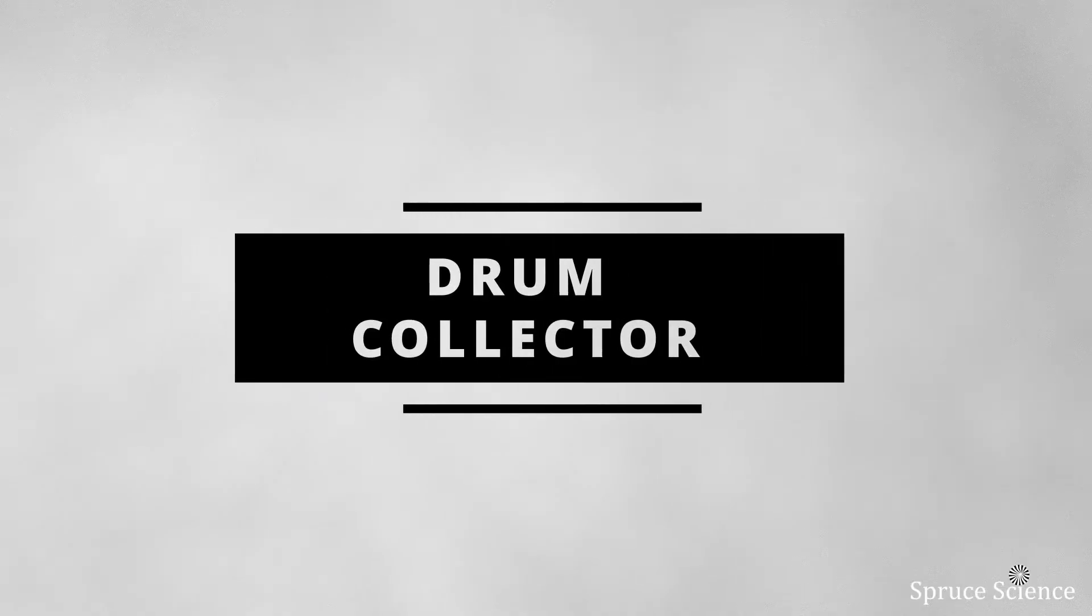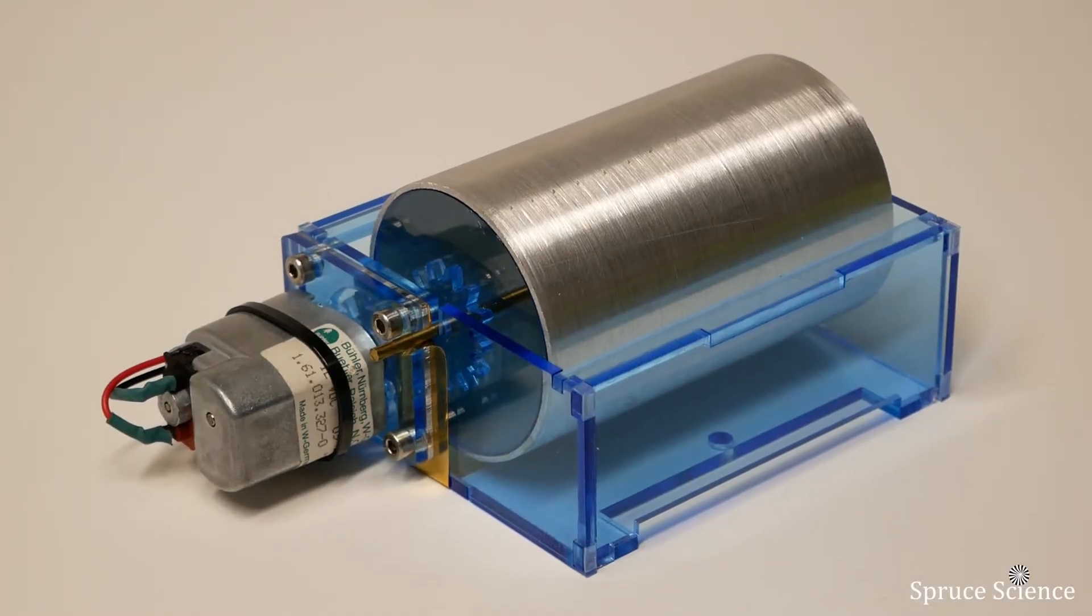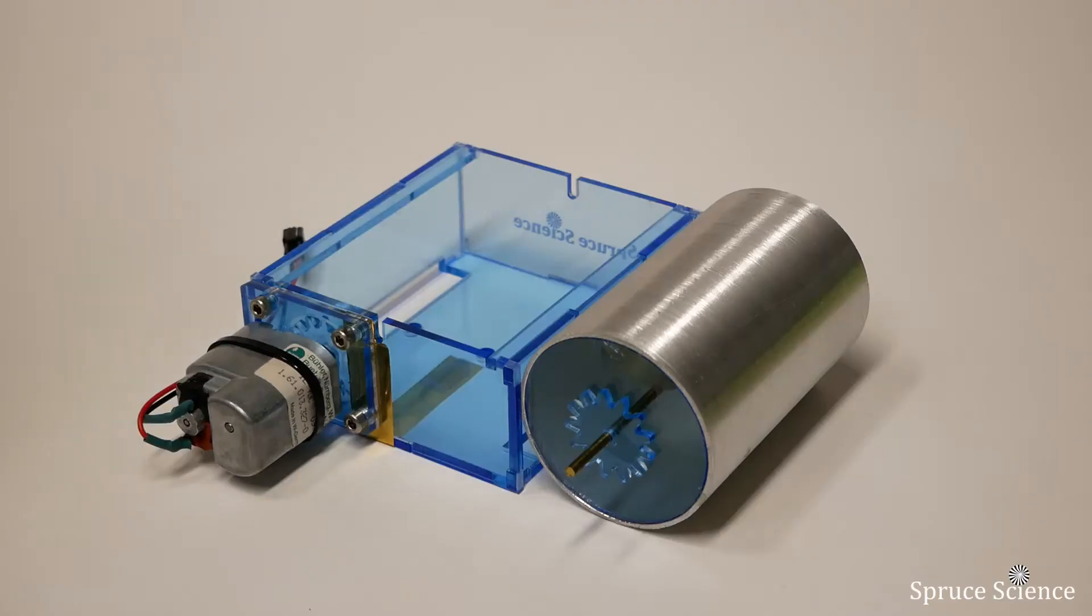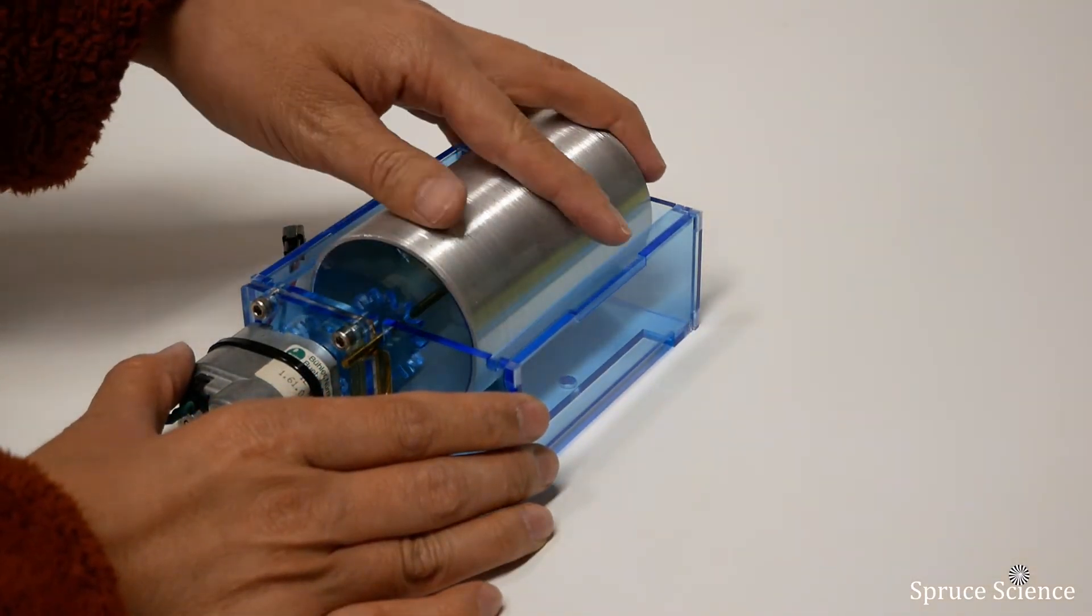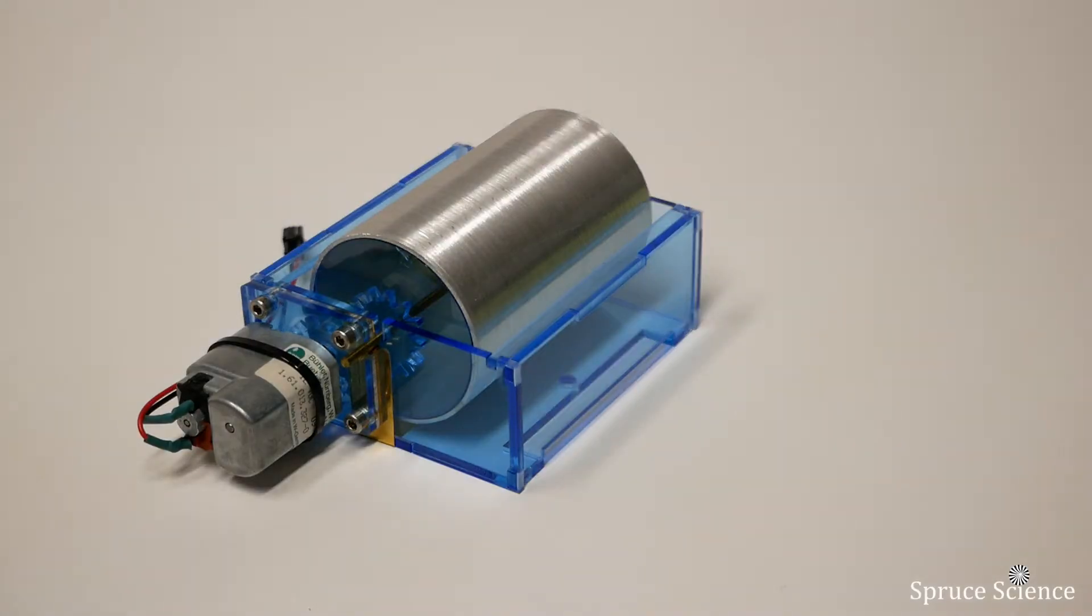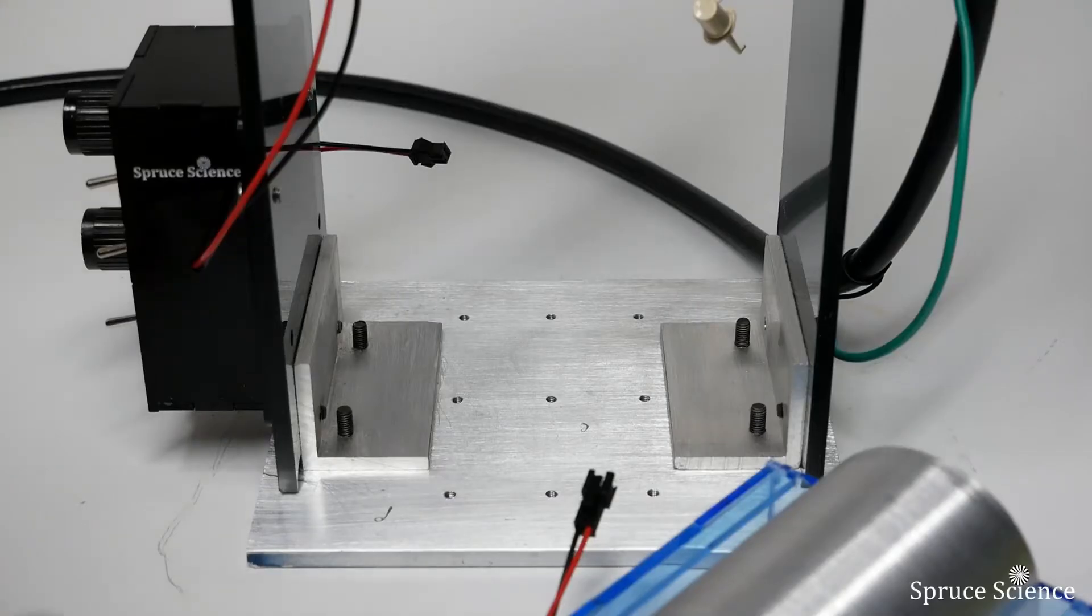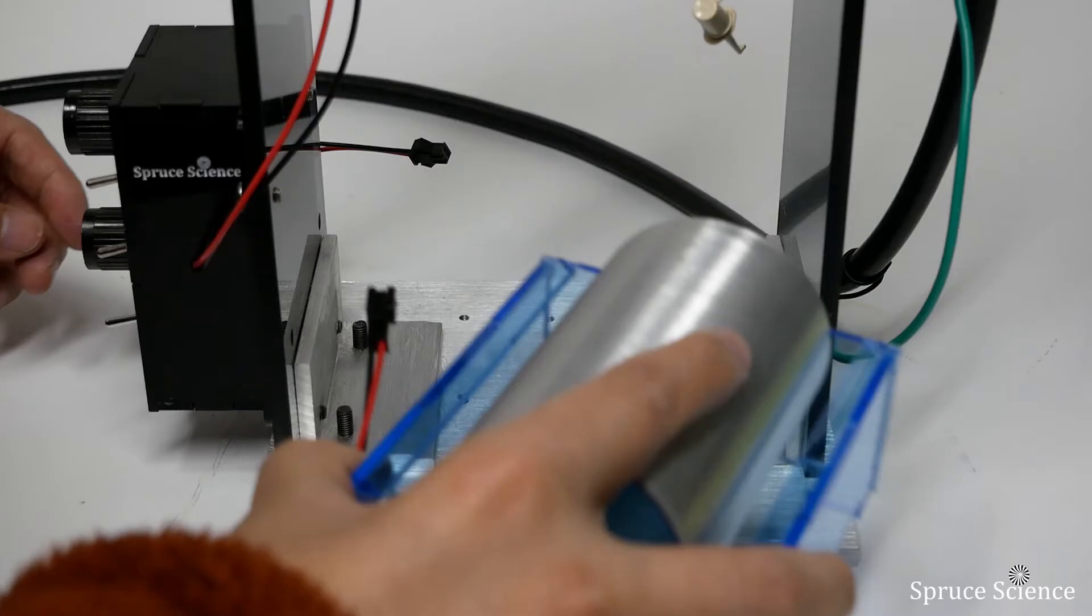Let's first go over the drum collector assembly. The drum collector is detachable and it is driven by a DC motor. To install the drum collector, align the gears and insert it gently in place. Place the collector assembly on top of the aluminum base.